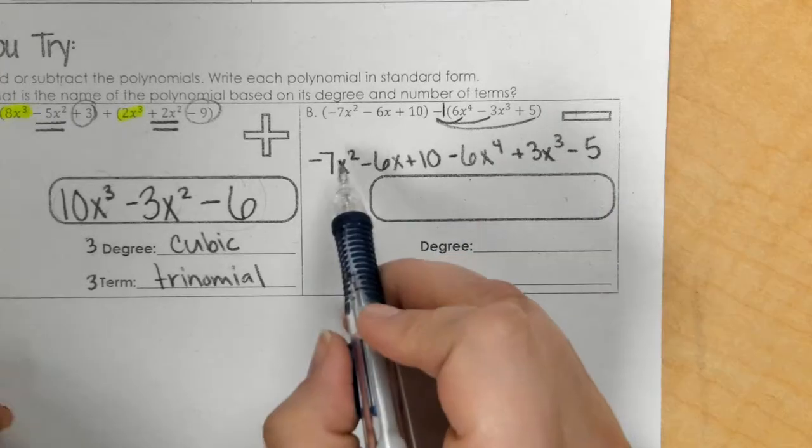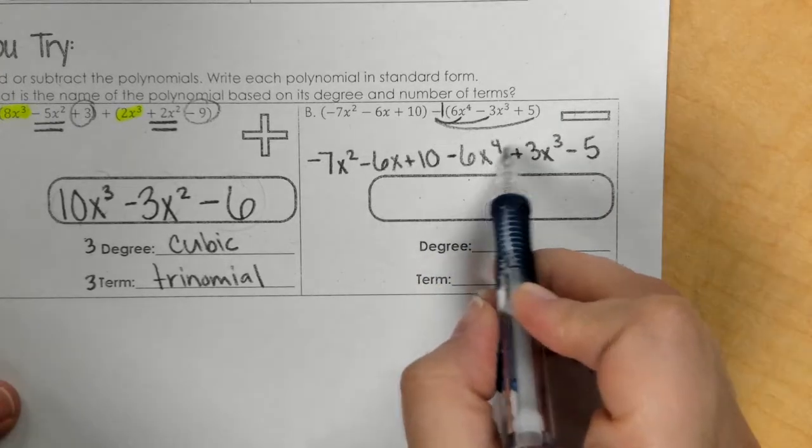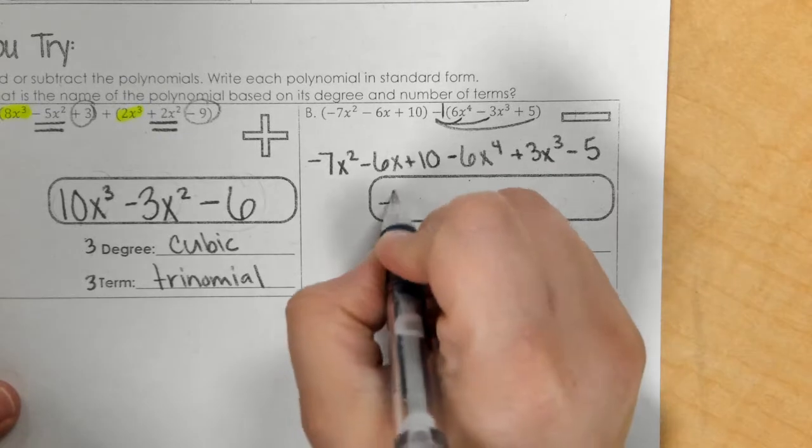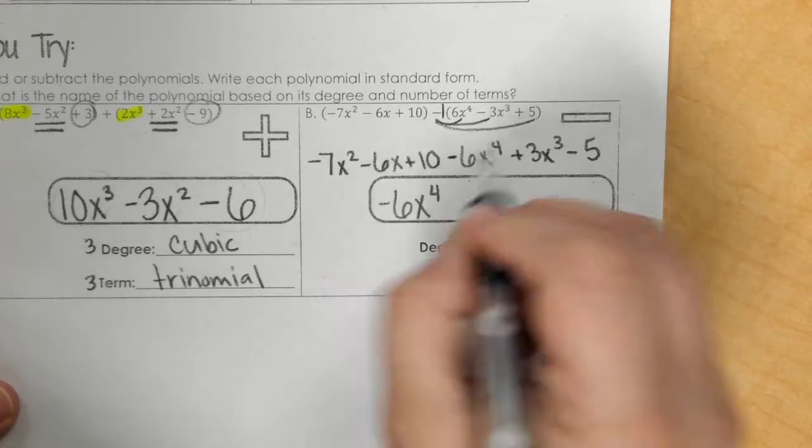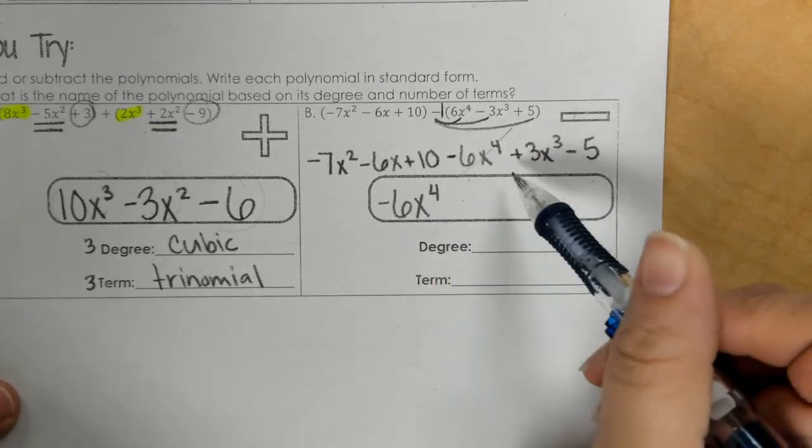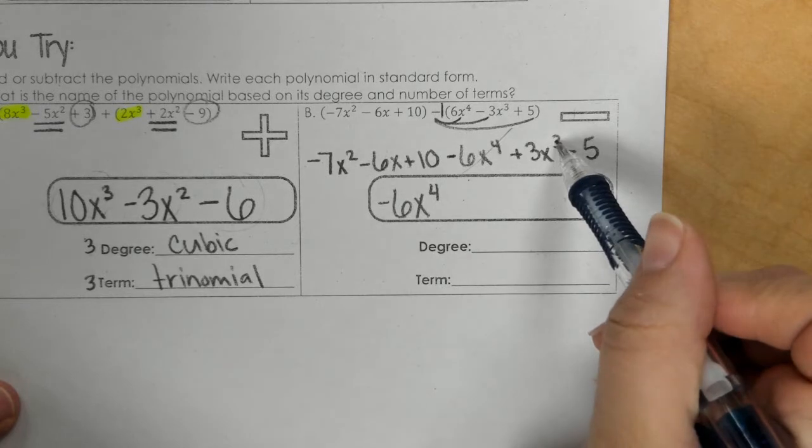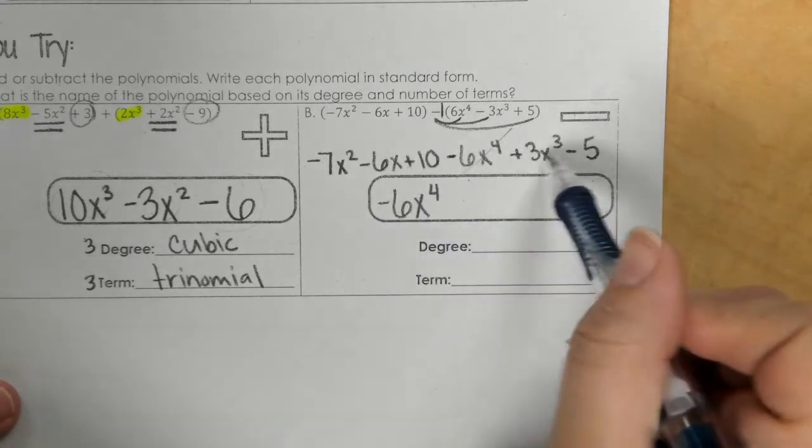So looking at my biggest exponent, I have a 4, nothing to combine with, so I'm just going to bring it down. Then I would go 3, and nothing to combine with that one.